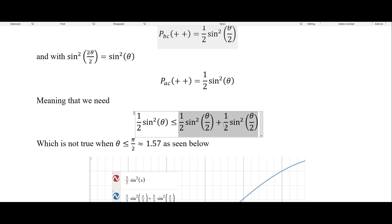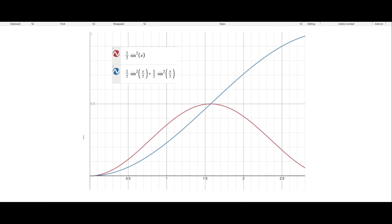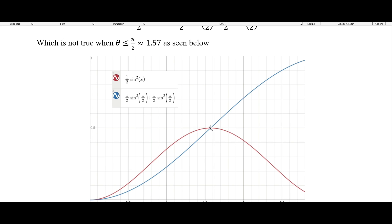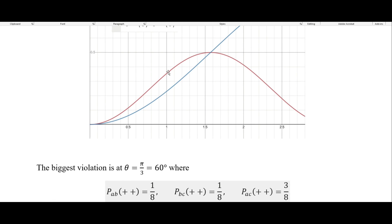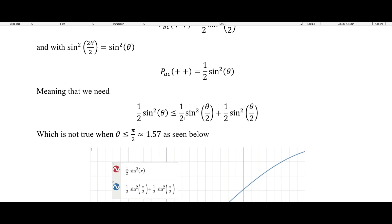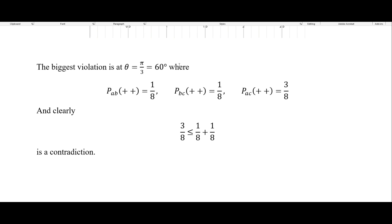But this inequality is not true when theta is less than pi over two, which we can see if we plot these in Desmos. When we get below around 1.57, it is actually the case that this one is greater than this one — so the inequality is violated. The biggest violation is at pi over three, which we can see is the biggest distance between those curves. At pi over three, we get our sine functions being one over eight, one over eight, and three over eight for the double angle. Clearly three over eight is not less than one over eight plus one over eight — three over eight is not less than two over eight. So we get a contradiction, and that is Bell's theorem.